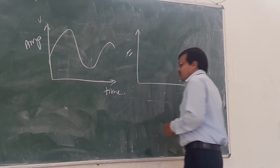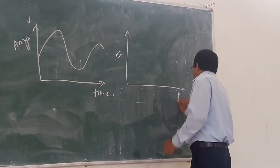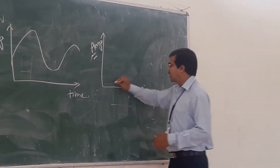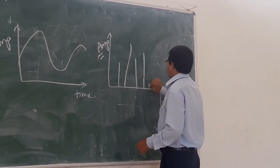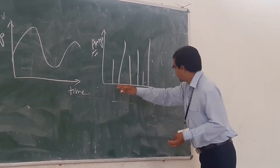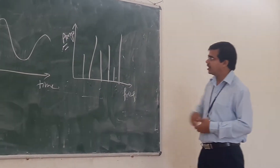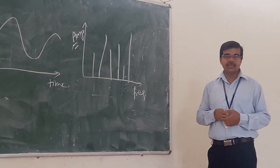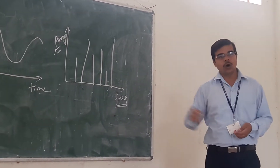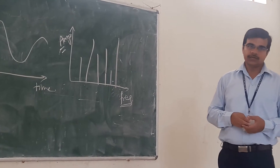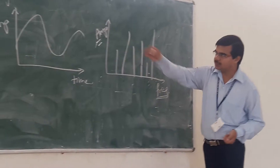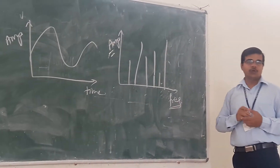On the other hand, if you go to your spectrum analyzer, it displays an amplitude-frequency graph. Since frequency is on the X-axis, it is called a frequency domain instrument. So CRO is your time domain instrument, while the spectrum analyzer is your frequency domain instrument.